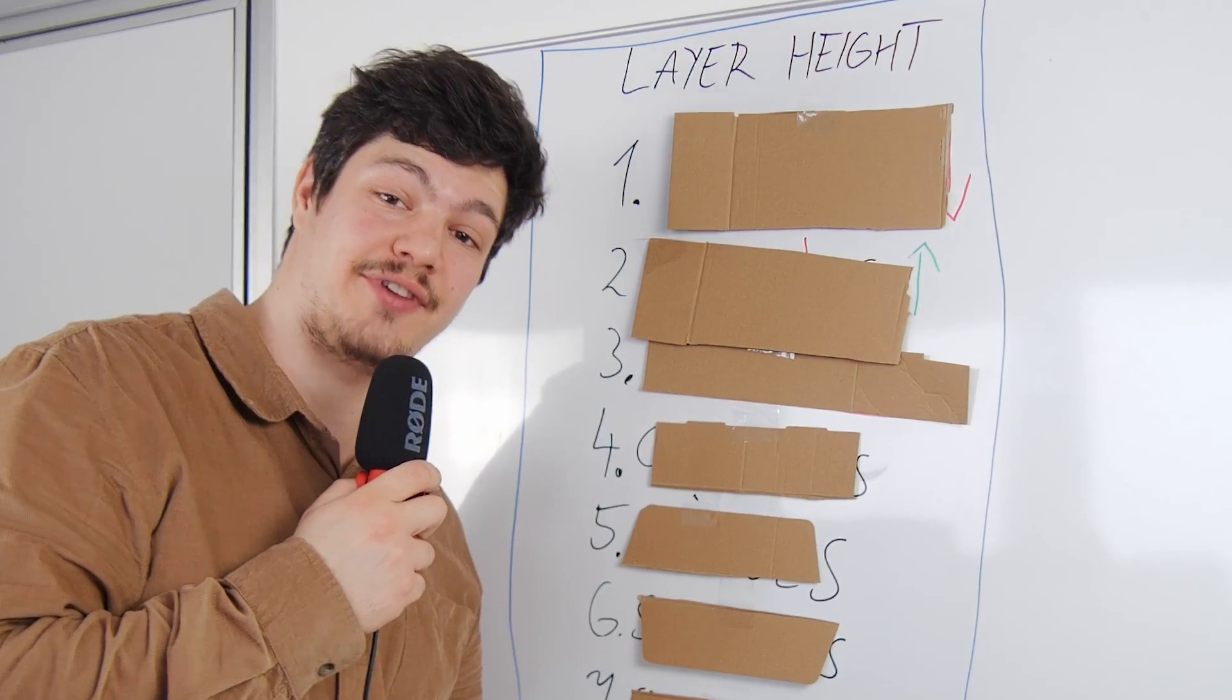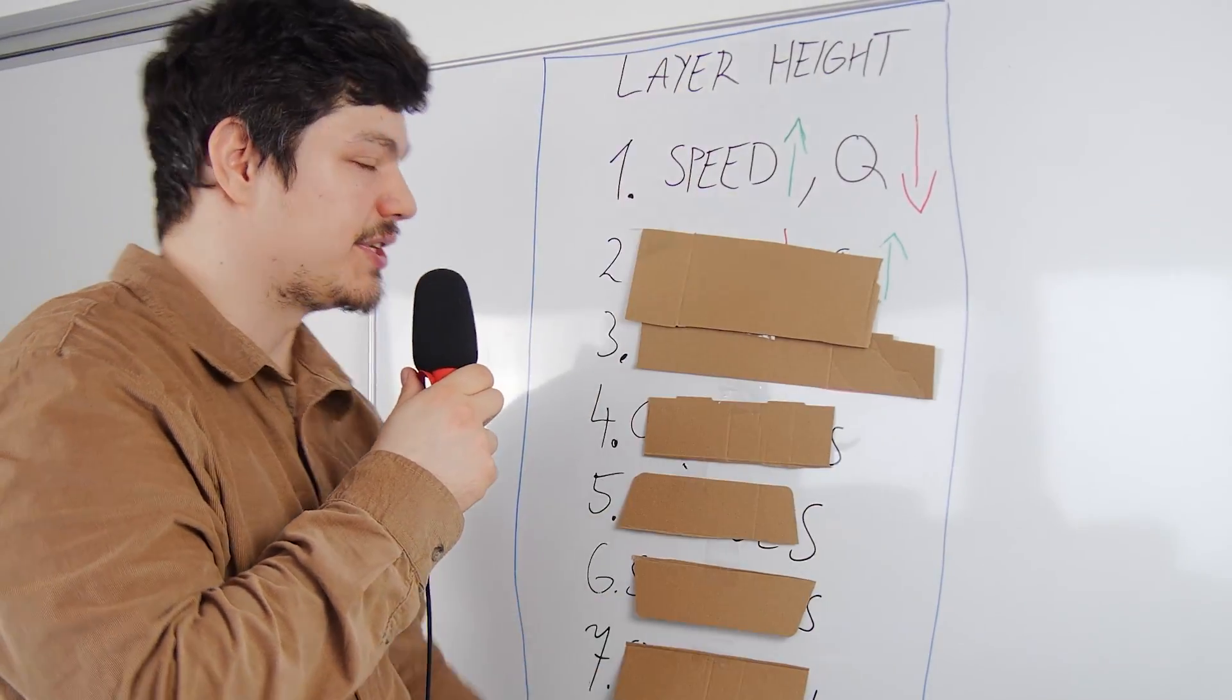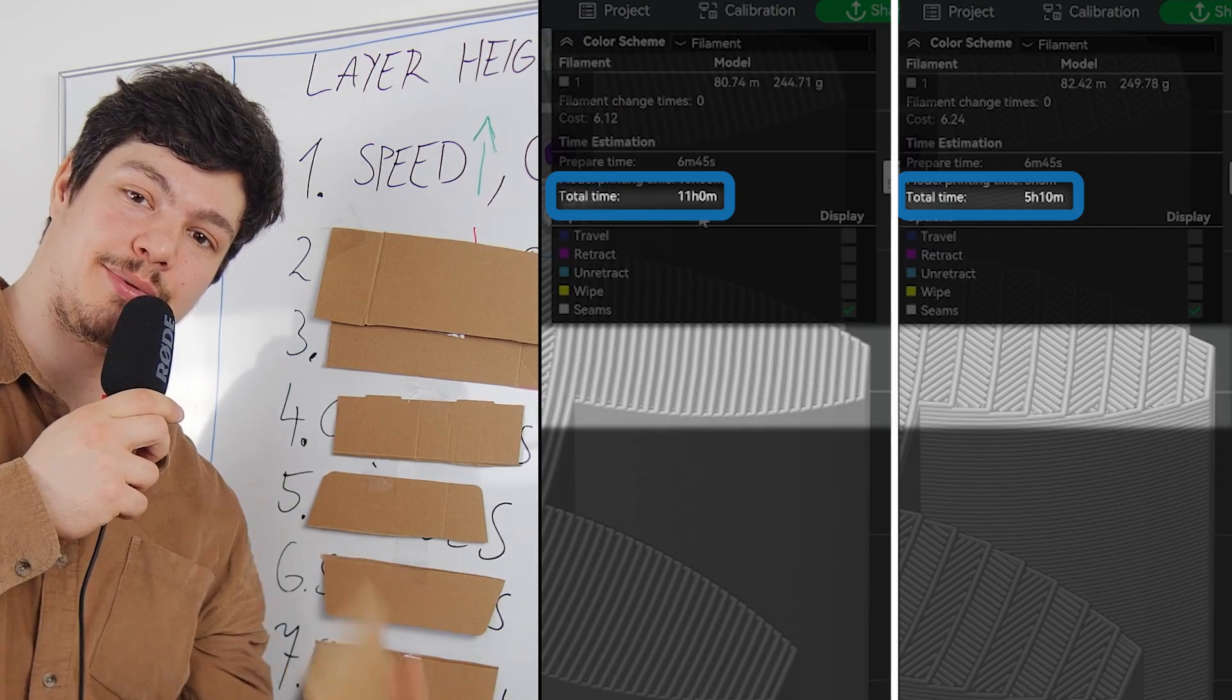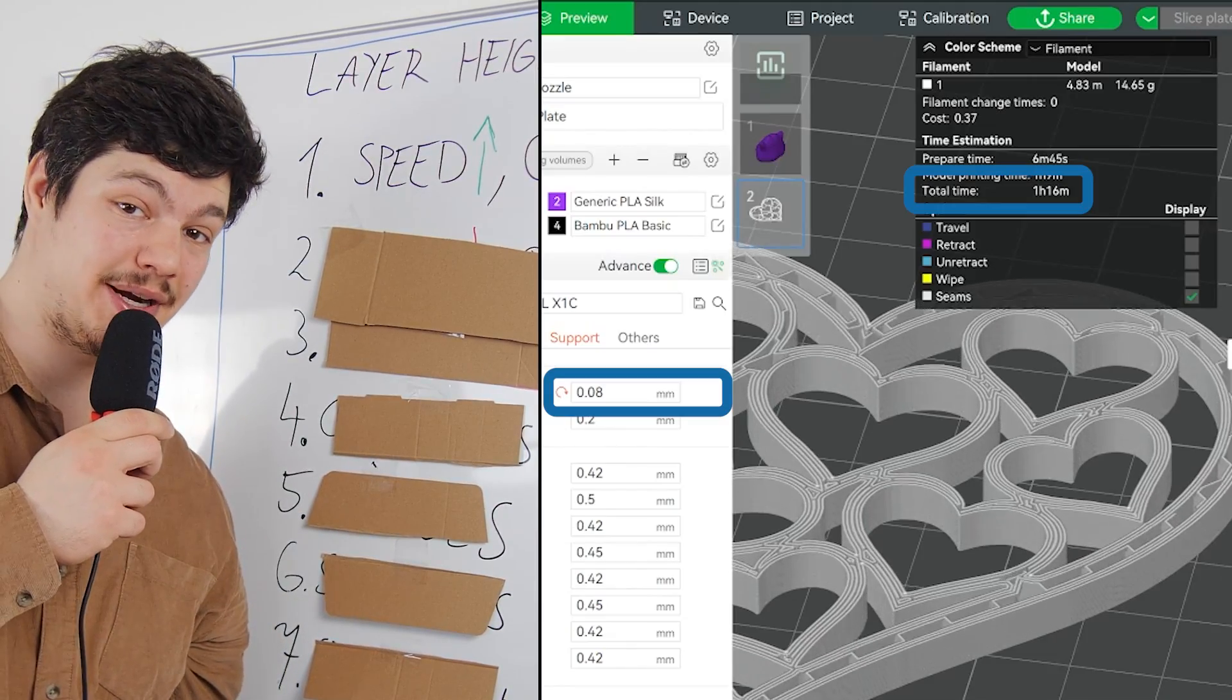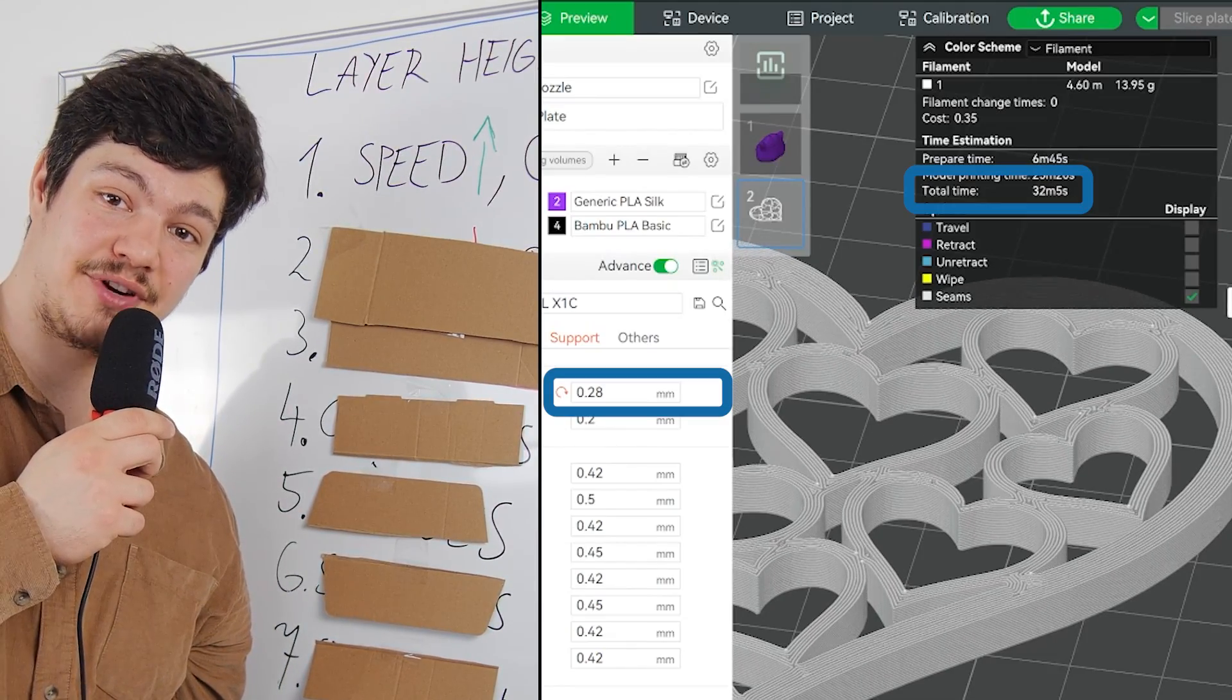These are the seven ways this setting can affect your 3D prints. Number one, you can speed up your 3D prints, but the quality will go down. Save some time with bigger layers for the prints that don't need vertical resolution.